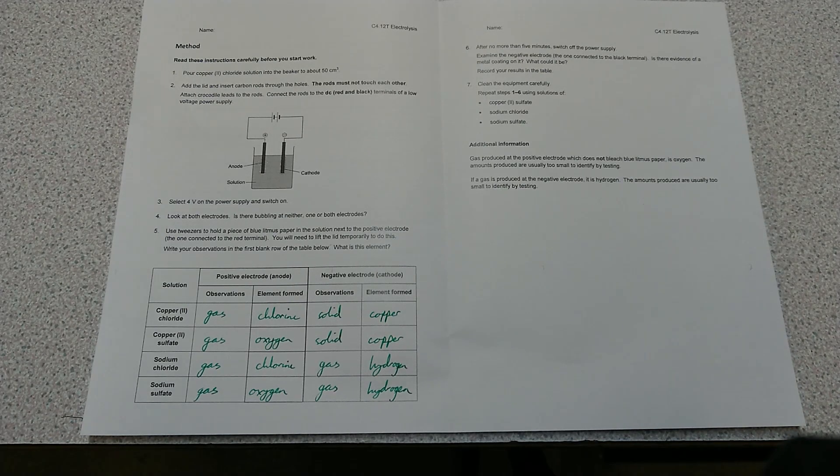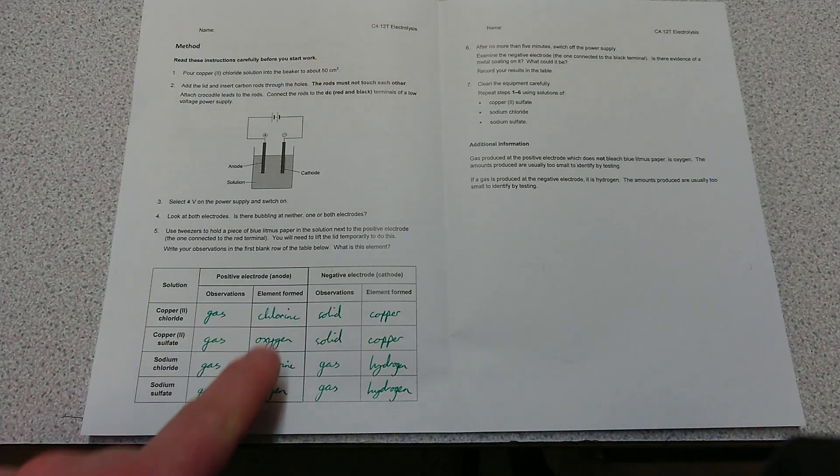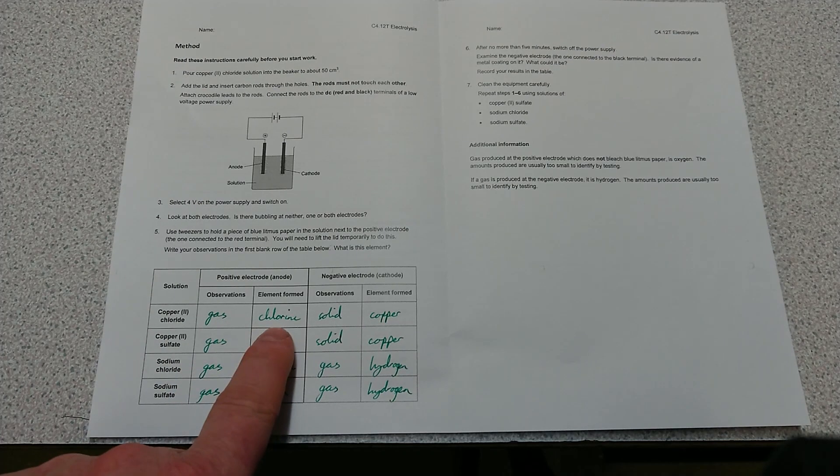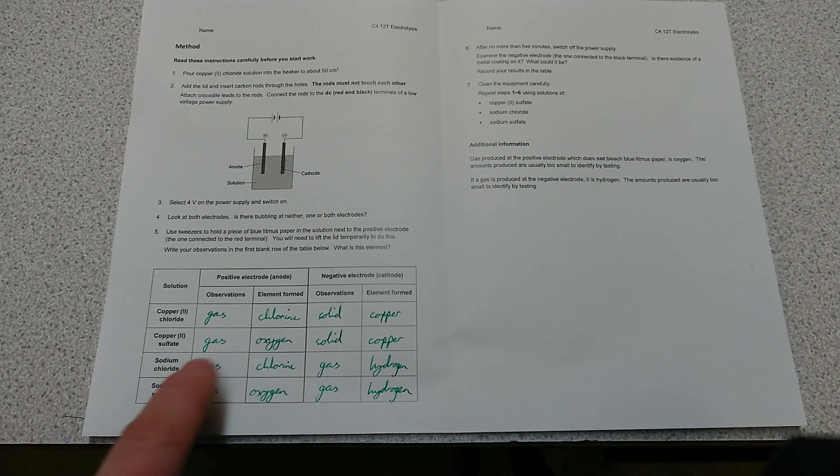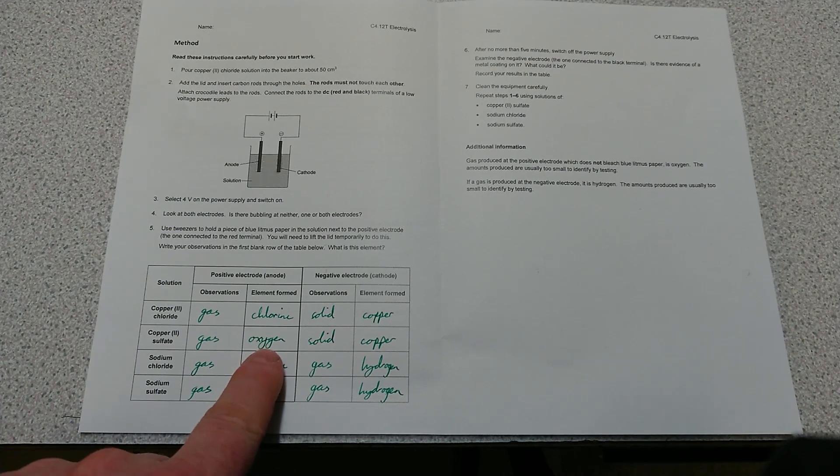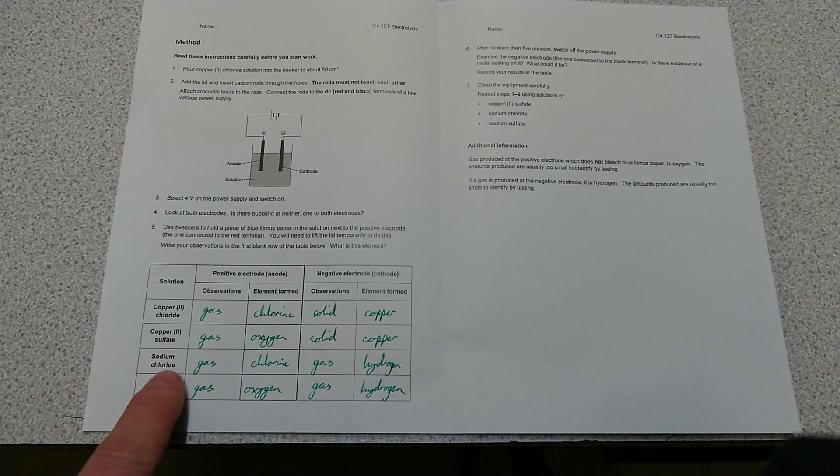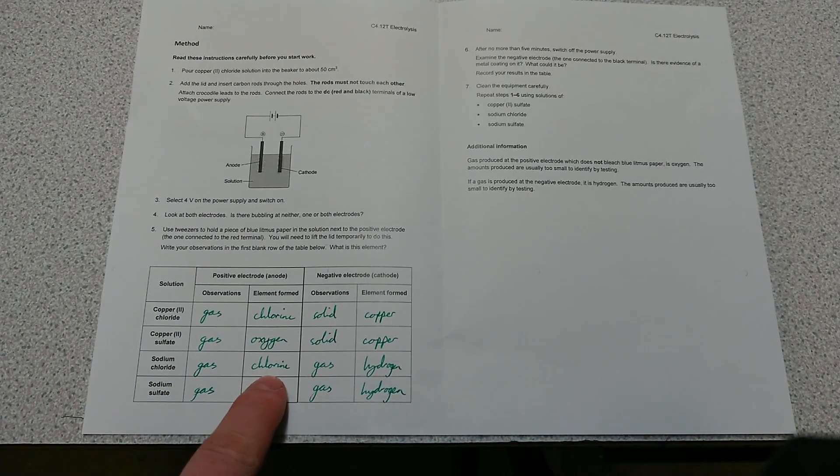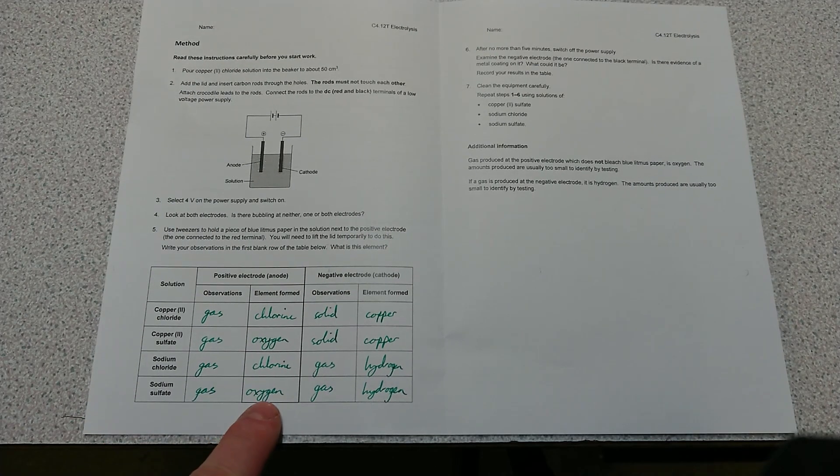So in summary, we can see what we've got given off at each of the electrodes. At the anode, for copper chloride we got chlorine given off; for copper sulfate we got oxygen given off; for sodium chloride we got chlorine; and for sodium sulfate we got oxygen.